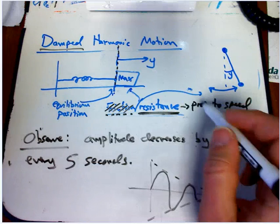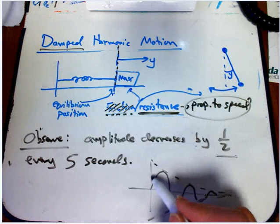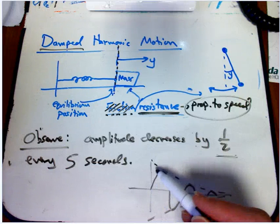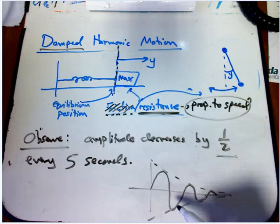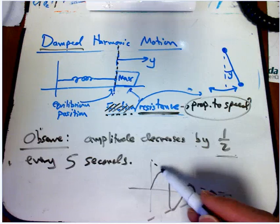If we have this assumption that the resistance is proportional to the speed, then when it's going... at the start, it's going quite fast because it's going a long distance in the same time, then you're going to get more resistance. So when you're going big and the amplitude's big, it's going to decrease fast.